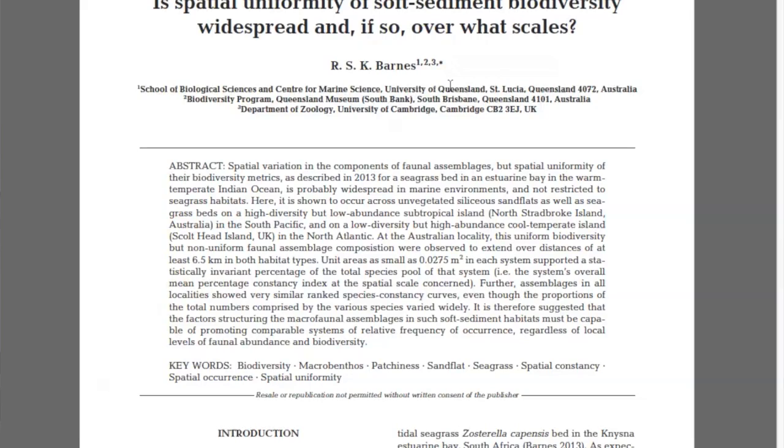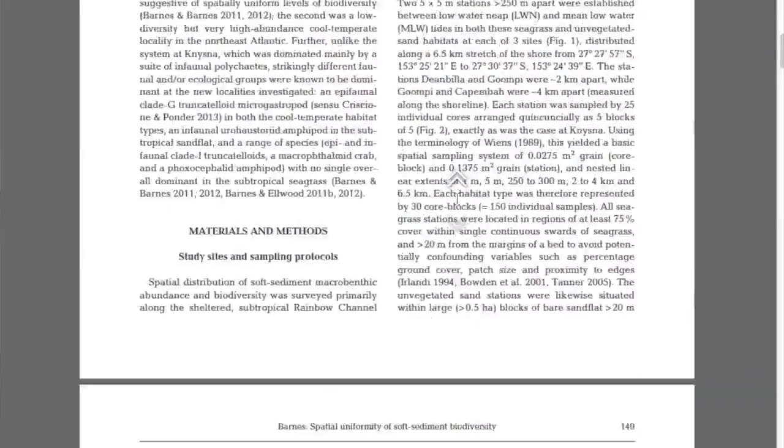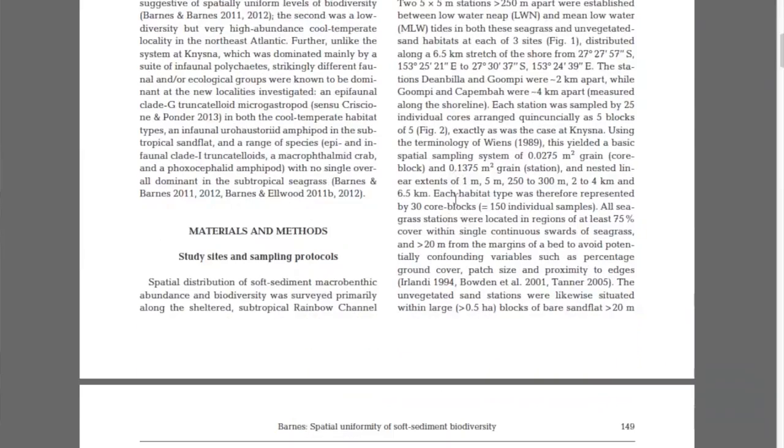It then goes into an abstract, which is basically just a concise summary of entirely what's in the paper. The introduction is the first major section that people will read. In here it contains the basic background from which the science has developed. It needs to be logical and well written, starting broad and then ending with a succinct overview of what will come up and what questions are being asked in the paper.